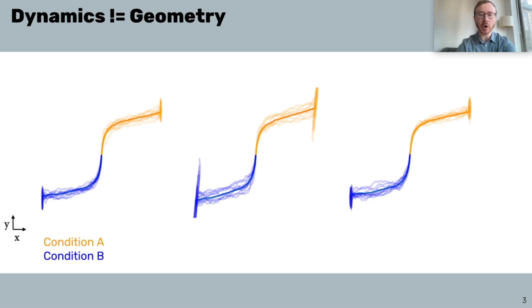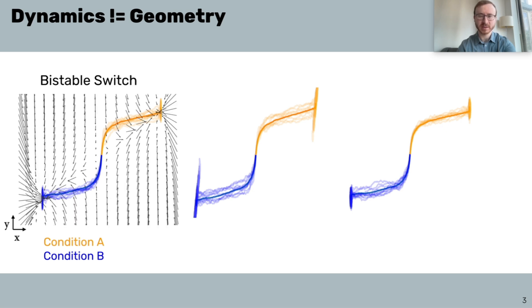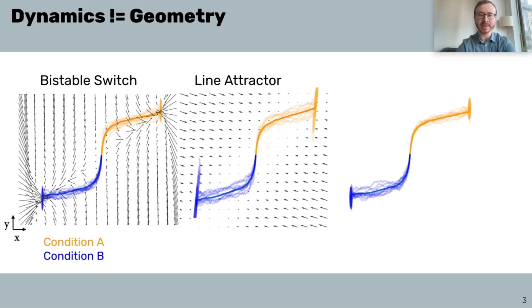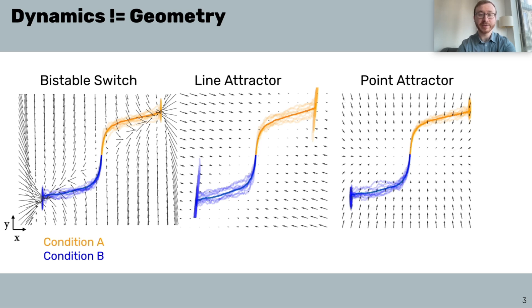But in fact, they have totally different internal dynamics that correspond to wildly different functions that the brain performs. The first one is a bistable switch, which has been used to model binary decision making. The second is a line attractor, which has been used to model how the brain tracks eye position. And finally, the last one is a point attractor that has been used to model stimulus filtering.